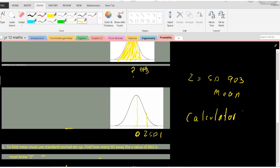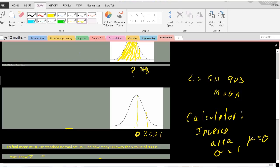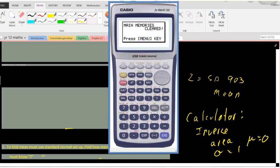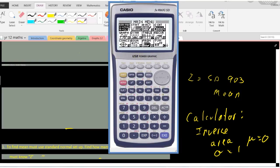We throw this into the calculator using inverse normal. We put the area in, we put the standard deviation which in this case is one, and we put the mean in as zero. On the calculator we go to menu, then stat.